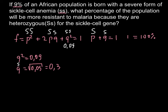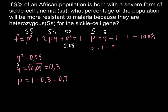From the formula, p + q = 1. Since we know q, we can find p by rearranging: p = 1 − q. So p = 1 − 0.3, which equals 0.7. Now we know p = 0.7, q = 0.3, and q² = 0.09.